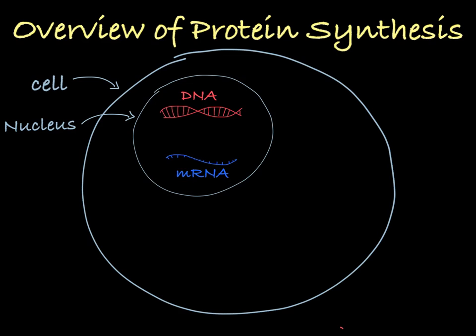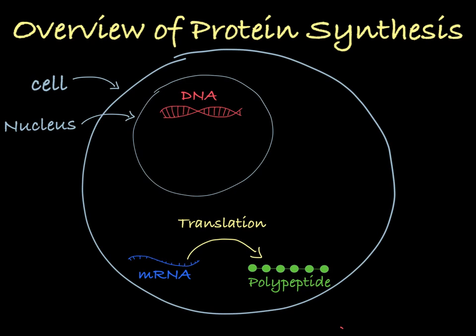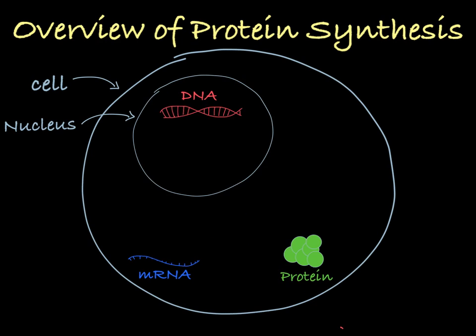In eukaryotes, that messenger RNA will then be transported out of the nucleus into the cytoplasm of the cell, where it will be read to create a polypeptide, which is a string of amino acids. This polypeptide will then fold into a protein.